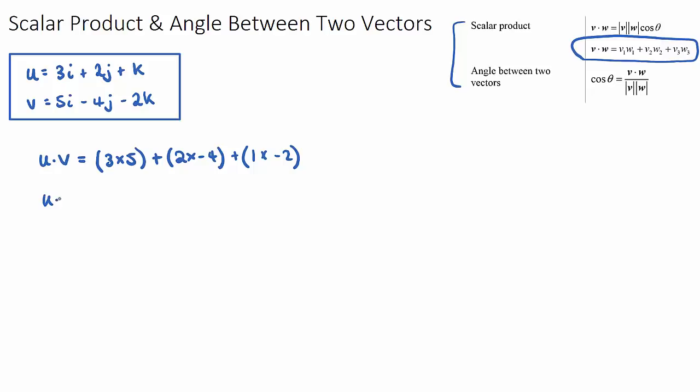So u dot v, the dot product, will be 15 minus 8 minus 2. So u dot v is 15 minus 10, which is 5. So this is the answer to our scalar product of the two vectors.